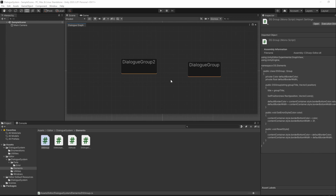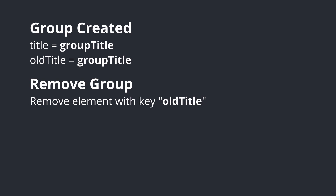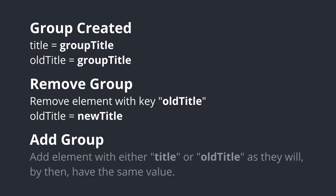I decided to go with the callbacks since we've been using them until now. For the old Title, we'll have to handle it ourselves. Whenever we initialize a Group, we'll set both the current and the old Title to be equal. Then when removing the Group, we'll remove it using the old Title and not the current Title. This way we can remove the element with the old name, because by the time we call our RemoveGroup method, the Group will already have the new name. Once we're done removing it, we update the old Title variable to hold the current Title again, and simply add the Group back using the AddGroup method.